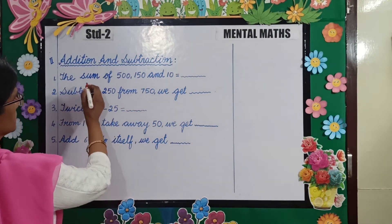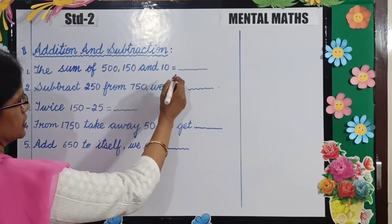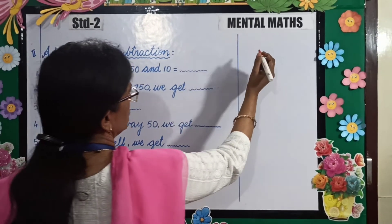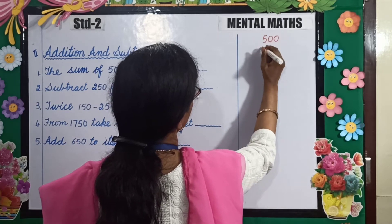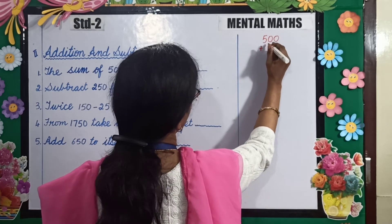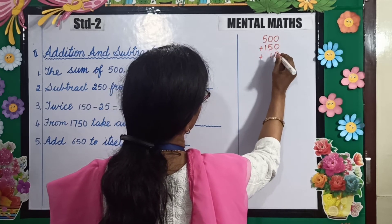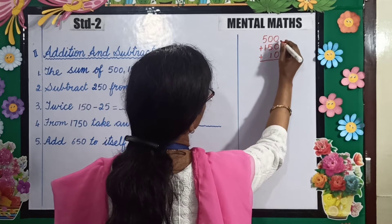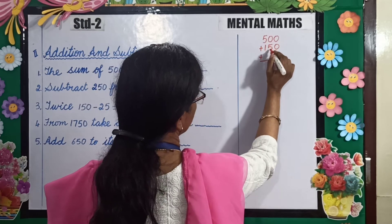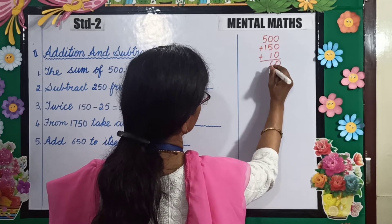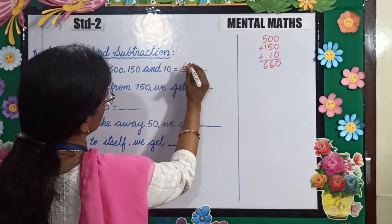Number 1: the sum of 500, 150 and 10 is equal to? We will add 3 numbers: 500 plus 150 plus 10. 0 plus 0 is 0, 0 plus 5 is 5, plus 1 is 6, and 5 plus 1 is 6. So your answer is 660.